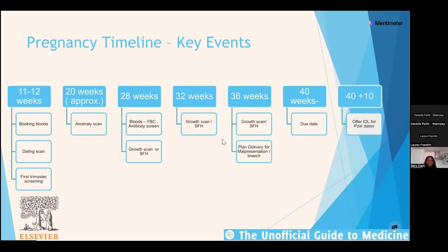Everyone gets a dating scan, which measures the crown-rump length — from the top of the baby's head to the baby's bottom — and that's the best way to estimate gestational age. Before this point, ladies use the date of the first day of the last menstrual period. On the dating scan we also do the first trimester screen, using nuchal translucency and blood tests in the combined screening to determine whether there's Down's syndrome (trisomy 21), Edwards syndrome (trisomy 18), or Patau syndrome (trisomy 13).